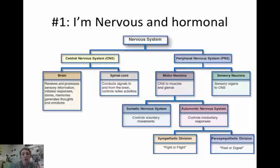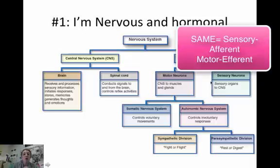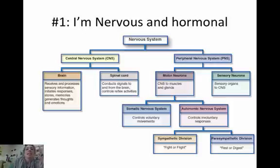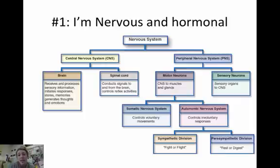It's also good to know the motor and sensory neurons. Sensory neurons are afferent — they go from the sensory organs to the central nervous system. Then motor neurons take it back out to the muscles and glands. We also have the endocrine system, which uses hormones. Focus on the pituitary gland — the master gland — which is connected to and controlled by the hypothalamus. The adrenal glands come up often with fight or flight, and also the ovaries and testes.